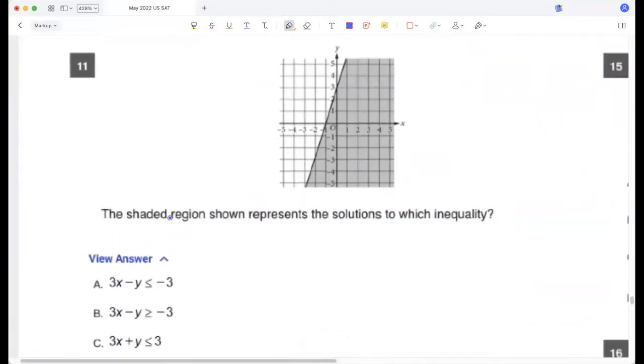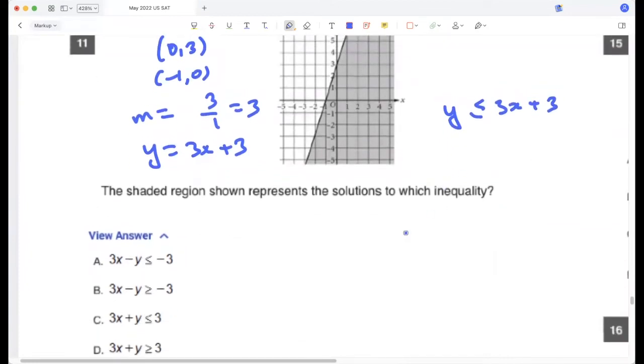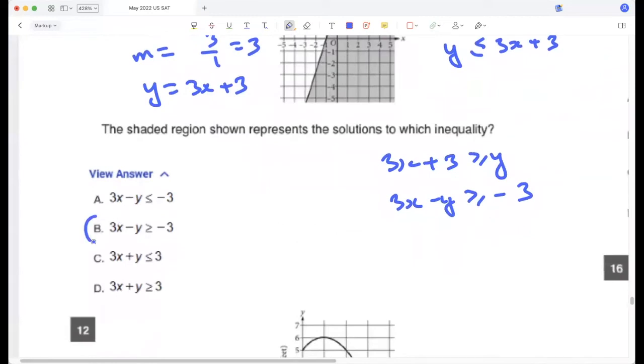The shaded region shown represents the solutions to which inequality? Okay, so let's first find the equation of the line. It passes through (0, 3) and (-1, 0). So slope is 3/1 and the y-intercept is 3. So y is 3x plus 3. And this is the region below the line. So it will be y is less than or equal to 3x plus 3. Okay, so that is 3x plus 3 is greater than or equal to y. So 3x minus y is greater than or equal to minus 3.